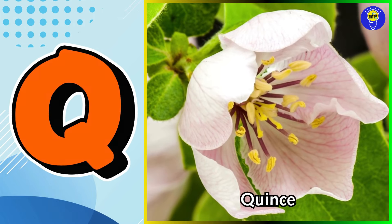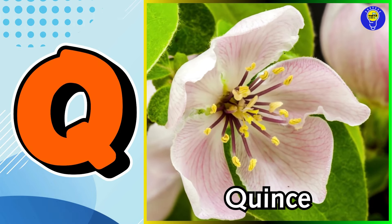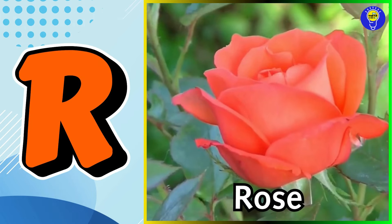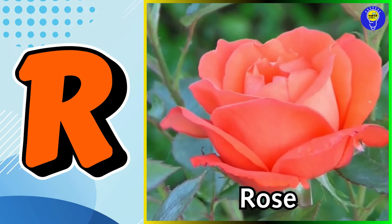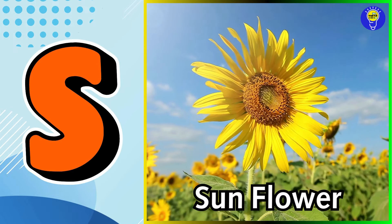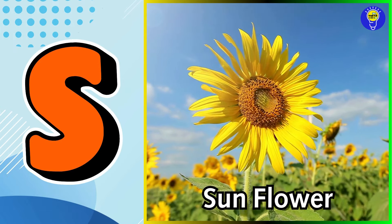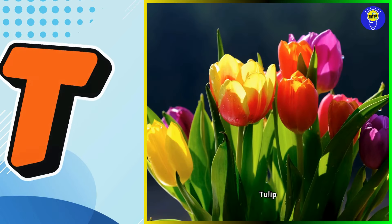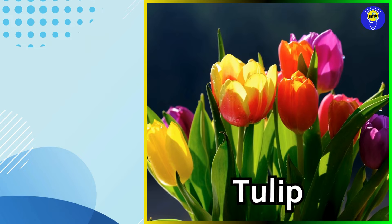Q is for quince flower. R is for rose flower. S is for sunflower. T is for tulip flower.